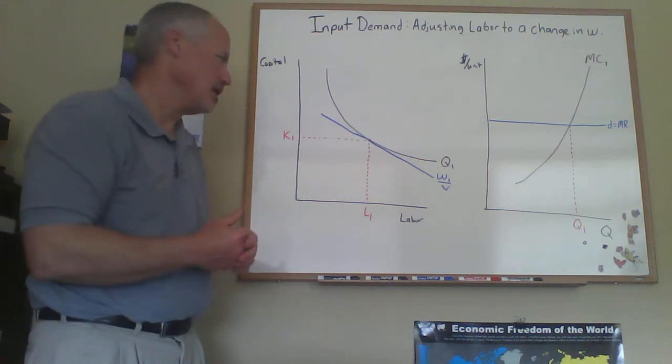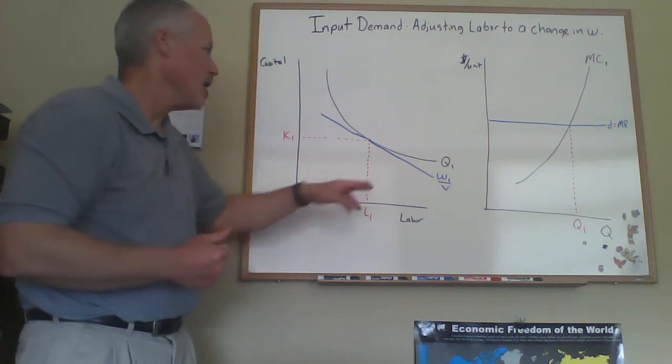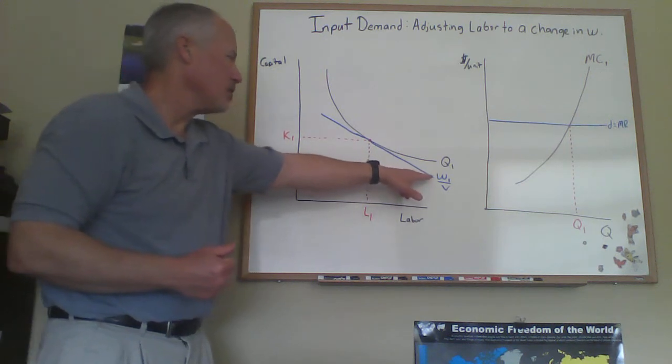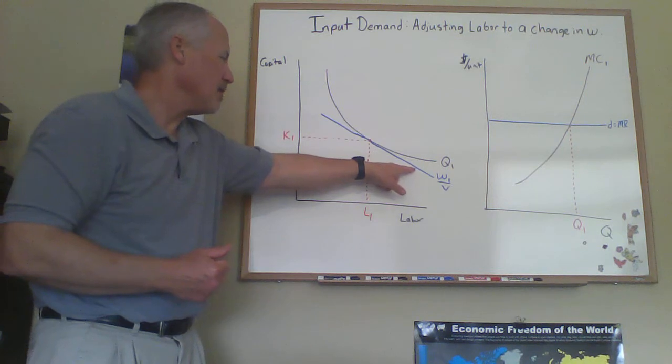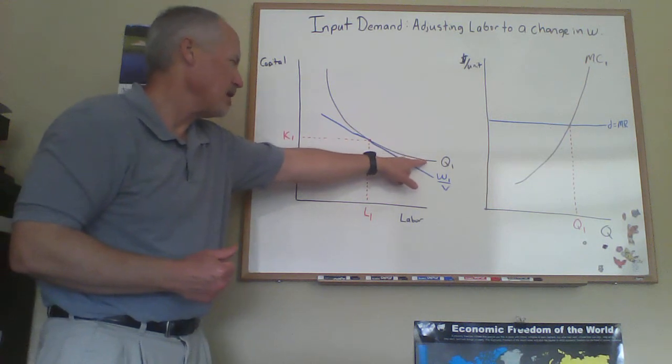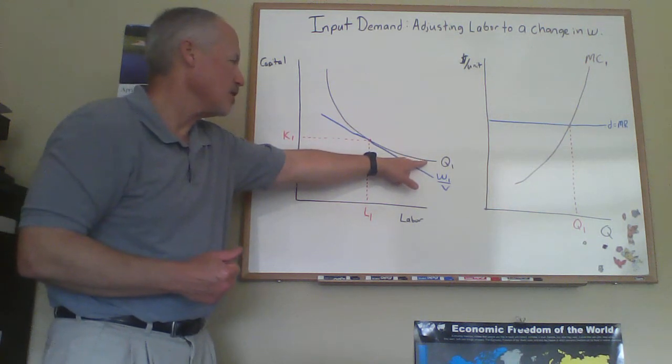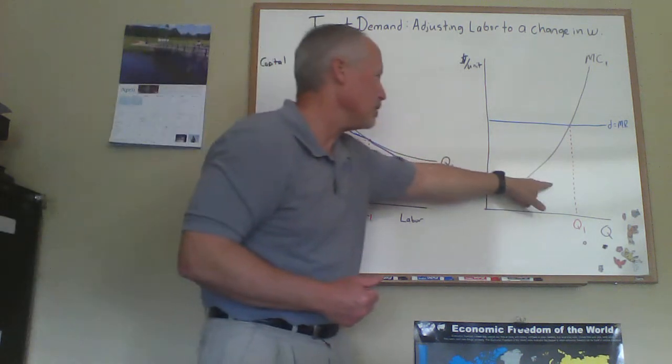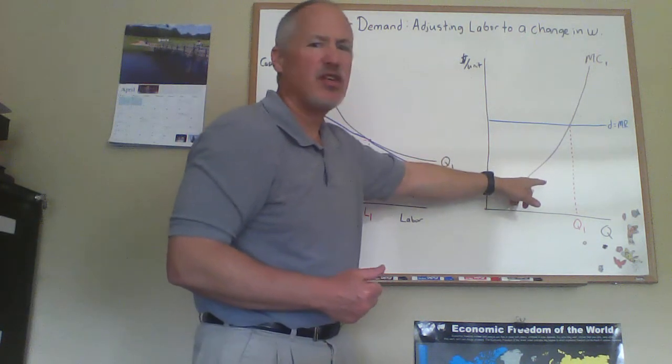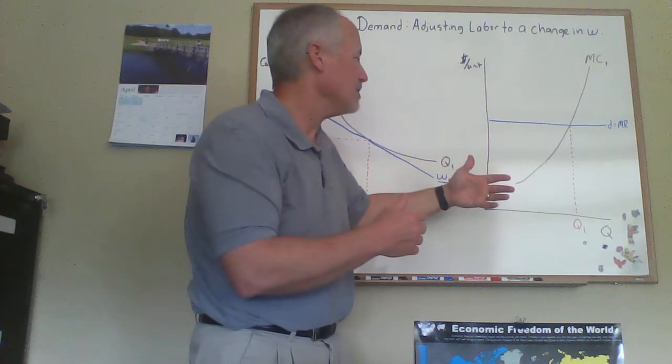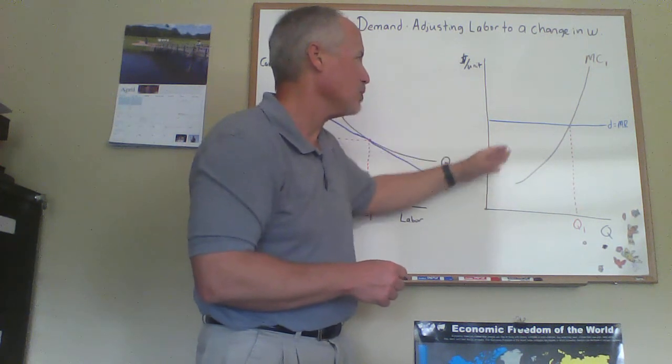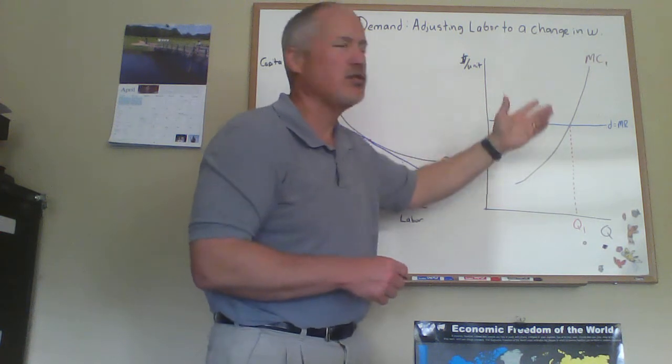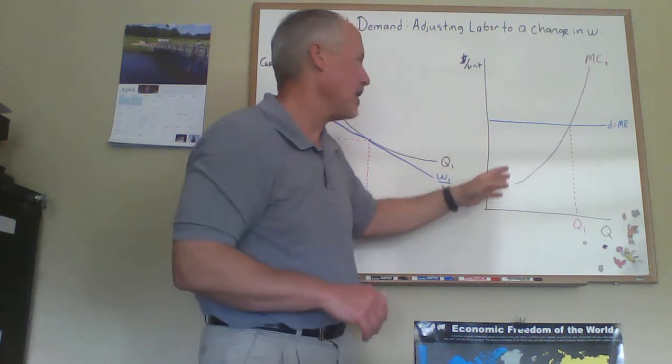We're going to look at an increase in the wage of labor. But initially, at the wage of labor W1, we take the isoquant Q1, which is the quantity the firm wants to produce, and we would get this off of the firm diagram from the model of perfect competition. We have marginal cost in here, we also have average cost but we didn't draw that in here.